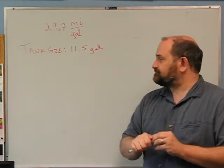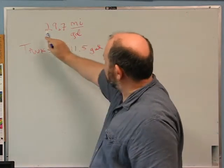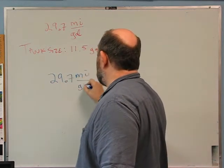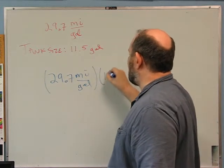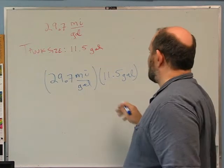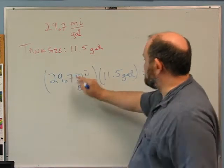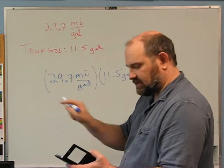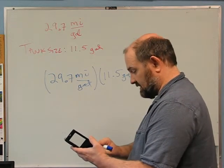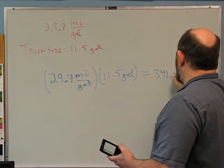I'm going to answer a different question first: how many miles can I drive before I run out of gas? Every gallon of gas lets me go 29.7 miles, so 29.7 miles per gallon. I've got 11.5 gallons, so I just multiply the number of gallons by the number of miles I get for each gallon and I'll get the number of miles I can go. Notice I have gallons on the top and the bottom — it's just multiplication, so I can cancel that out. I'll be left with miles. I multiply 29.7 by 11.5 and I get 341.55 miles.